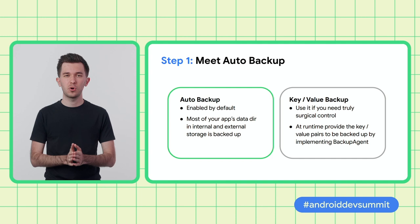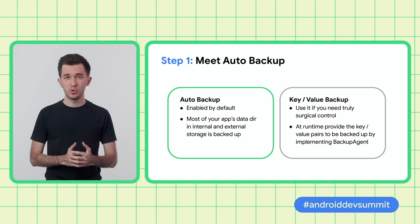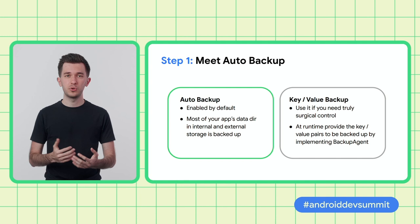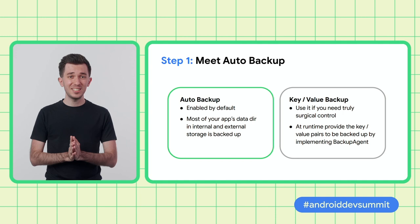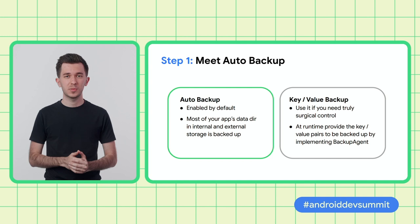By default, all apps participate in auto-backup. This means that most of your app data will be included in both cloud backup and D2D transfers. We'll only exclude the cache directory and the special no-backup folder where you can put stuff that you don't want to be backed up or transferred. While auto-backup is the approach we recommend, there is also something called key-value backup, where you need to, at runtime, provide a set of key-value pairs that you want to be backed up — and we'll look at that option later in the talk.